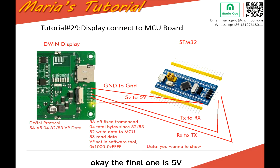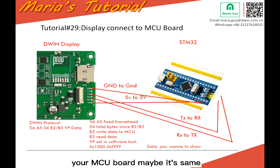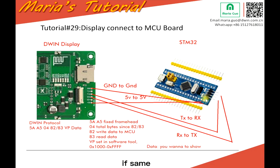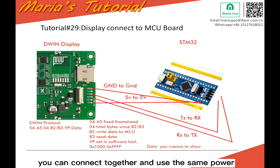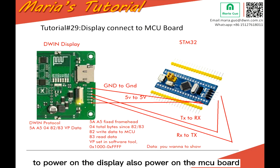The final connection is the 5V power. For the D1 LCD display, the voltage may be 3.3V or 5V. In your MCU board, the voltage may be the same as the display or different. If they are the same, you can connect them together and use the same power supply. But if the power is different, you should prepare a separate power supply for the display and also power the MCU board separately.